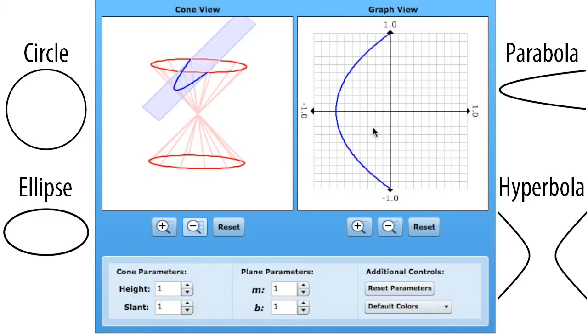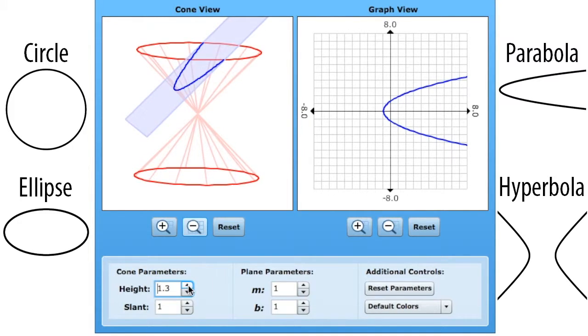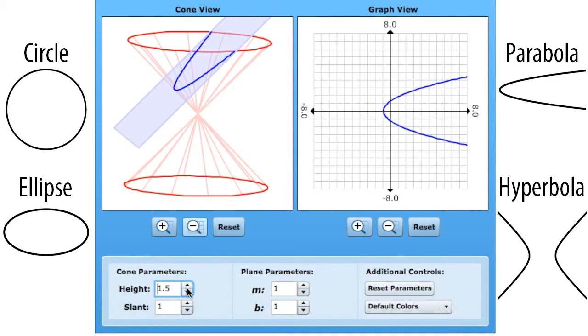On the top right, we have the graph view. I would zoom out to probably about four or eight, just so we can get a good view. If it's zoomed in too much, it's kind of hard to see. Down here on the bottom left, we have our cone parameters. All this height is, it's just the height of the cone. Sometimes you might want to increase that so you can get a better view.